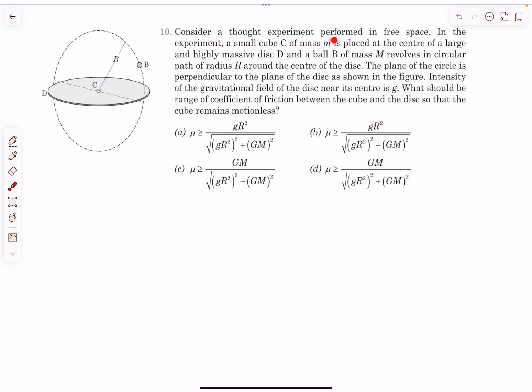Consider a thought experiment performed in free space. In the experiment, a small cube C of mass m is placed at the center of a large and highly massive disk D, and a ball B of mass M revolves in a circular path of radius R around the center of the disk.